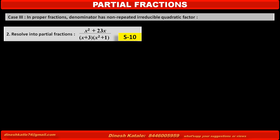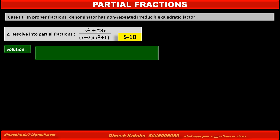Problem 2: Resolve into partial fractions (x² + 23x) / [(x+3)(x²+1)]. In the denominator, one factor x+3 is linear, and the other factor x²+1 is quadratic, irreducible, and non-repeated. Therefore, for partial fractions we take numerator A for (x+3) and numerator Bx+C, which contains two unknown terms B and C, for the factor x²+1.